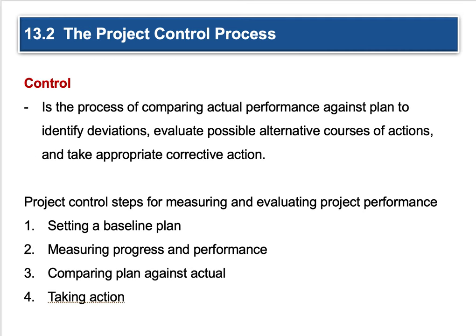The project control process is the process of comparing actual performance against the plan, identifying deviations, evaluating possible alternative courses of action, and taking appropriate corrective action. It comes down to responsibility — are you being responsible with your own timeline? You make a plan, you stick to it, and you adjust it if a problem arises, making sure you're zeroing in on your project objective in a timely and cost-efficient manner. Project control steps are: setting a baseline plan, measuring progress and performance, comparing plan against actual, and then taking action.